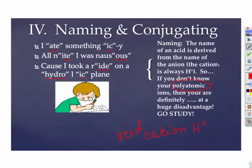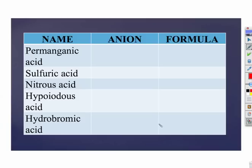This means that if you want to go back and forth from name to formula, you have to know your polyatomics. If you don't know your polyatomic ions, you are definitely at a pretty big disadvantage in dealing with acids. So you need to learn those. You've got to know your polyatomics.